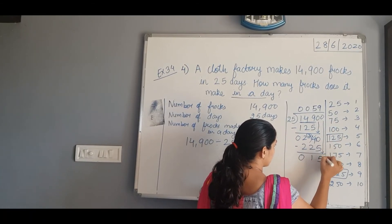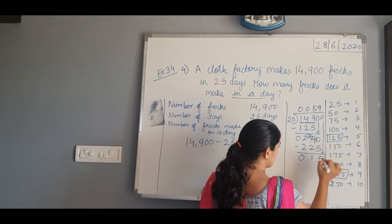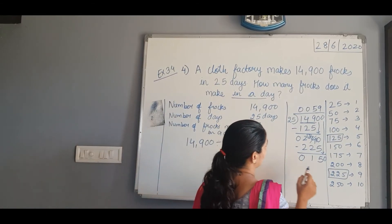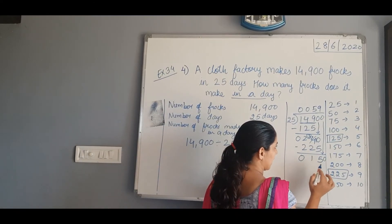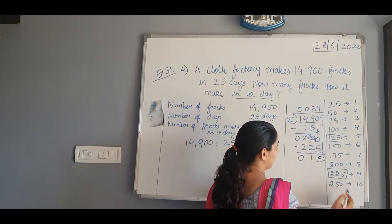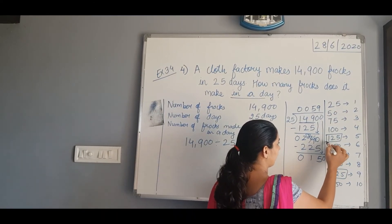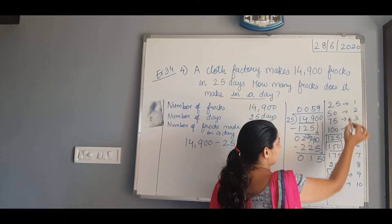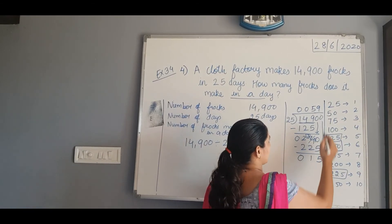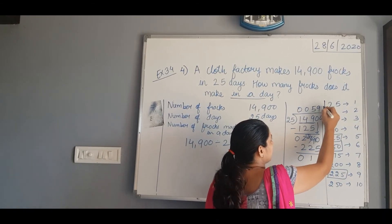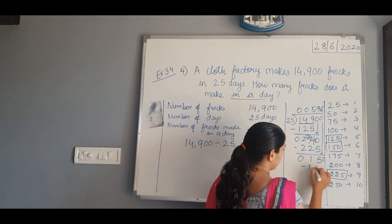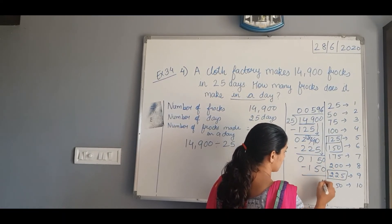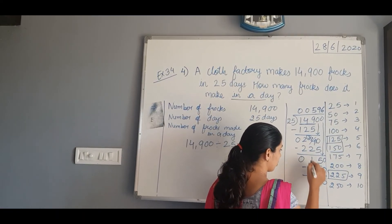Now we bring the last digit down — that is 0. In the table of 25, we check if 150 is there. Yes, 150 is there: 25 sixes are 150. So we put 6 here and subtract 150. 0 minus 0 is 0, 5 minus 5 is 0, and 1 minus 1 is 0. So we got the answer as 596.